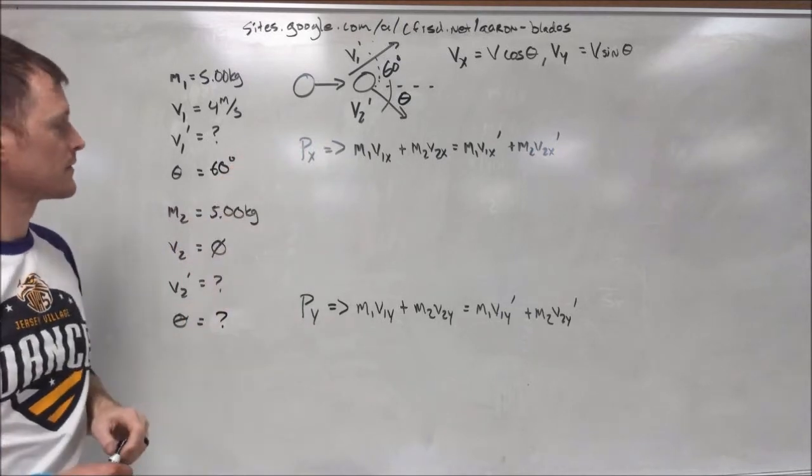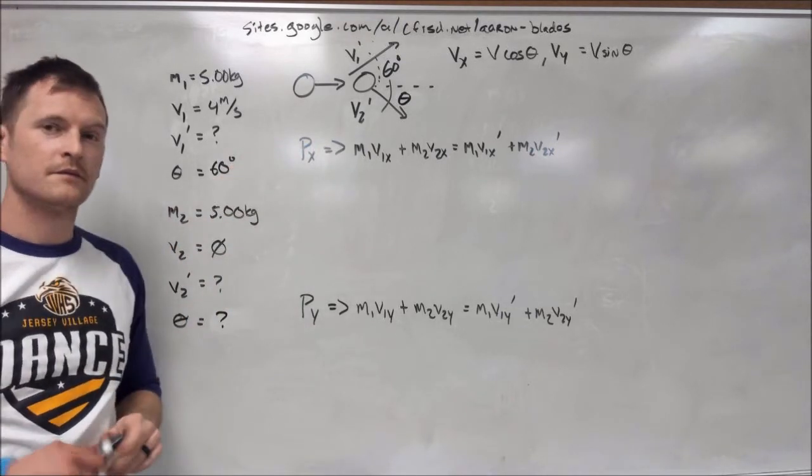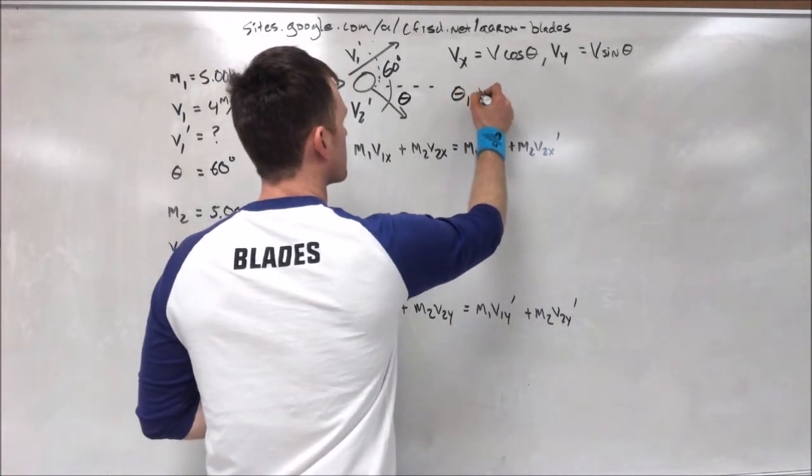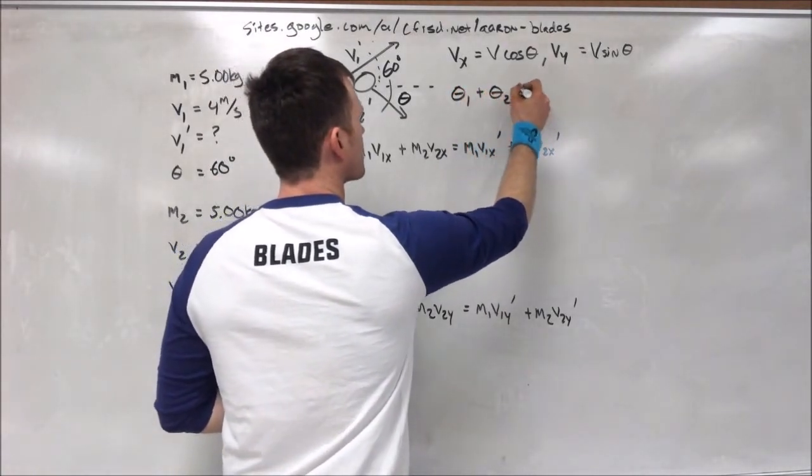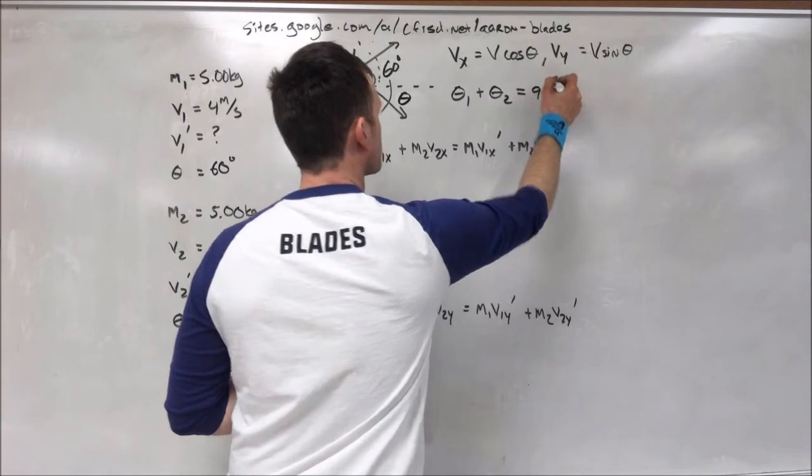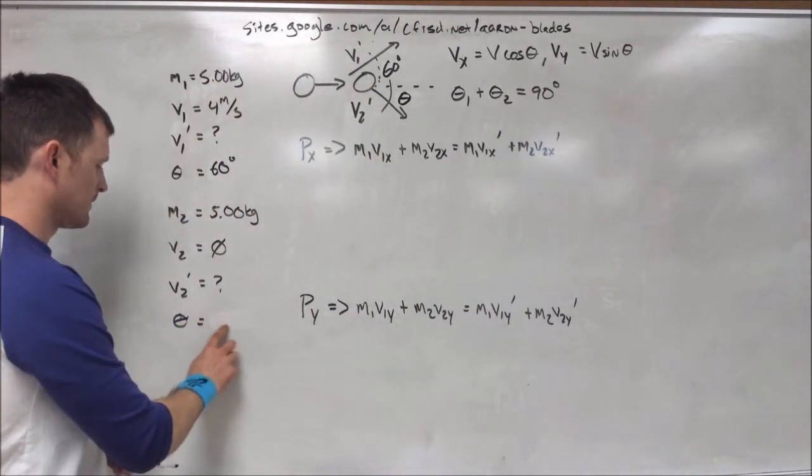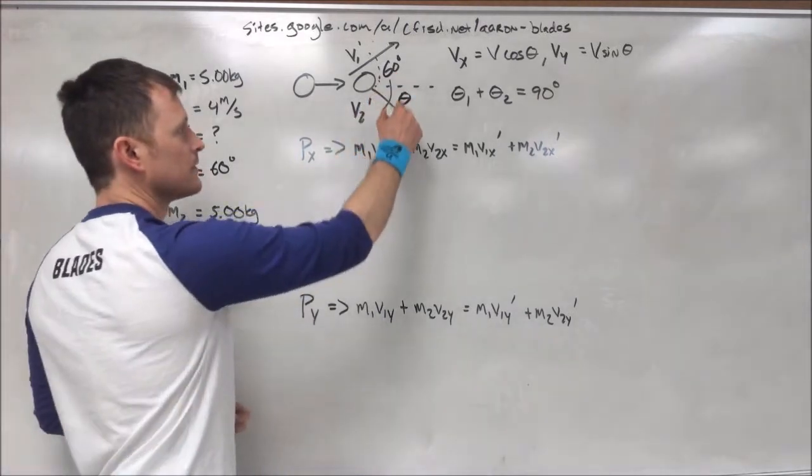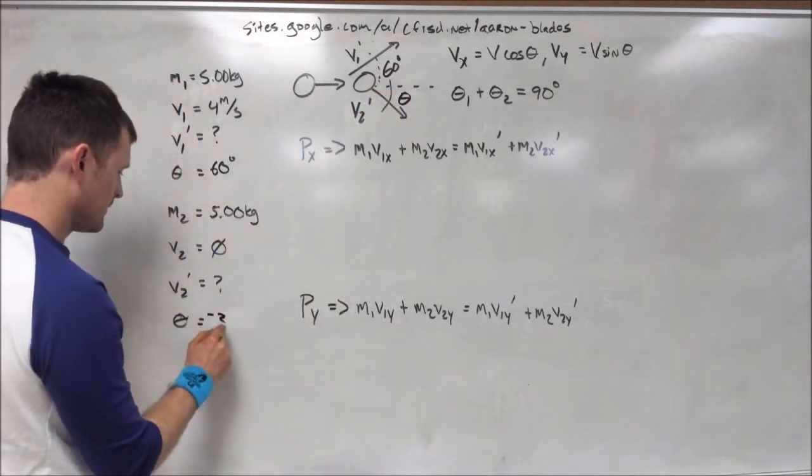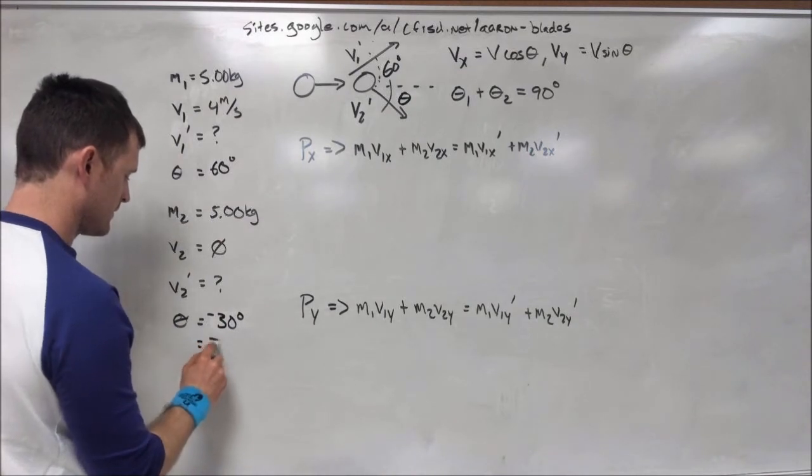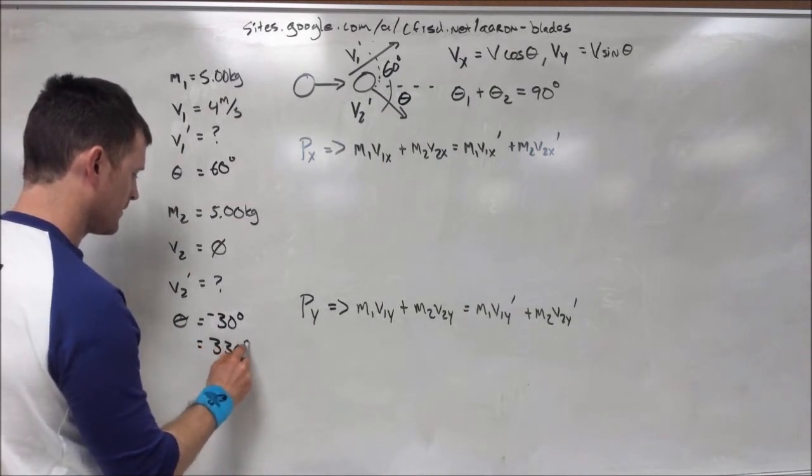Now, because the two objects are identical, as stated in the problem, we can make one assumption, that the two angles, theta 1 and theta 2, added together equal 90 degrees. Because of this, we know our second angle. The first angle is 60, and to add up to 90, it is 30. But because that angle is down from the horizontal, it is negative 30, or 330 degrees. This is important.